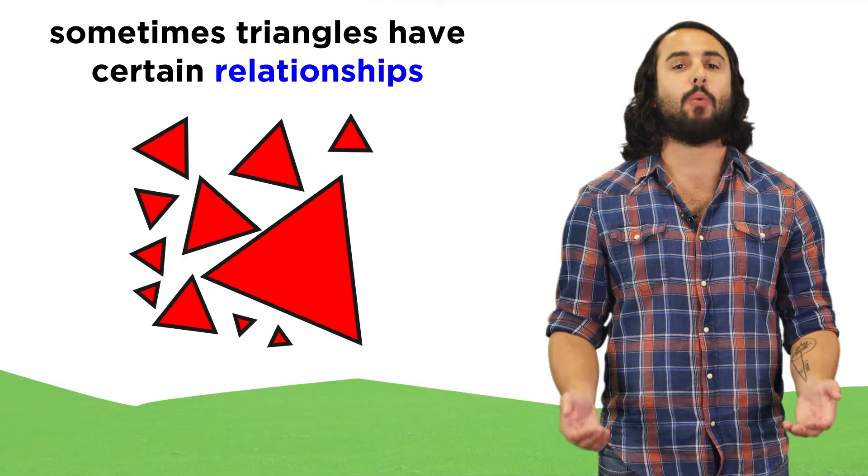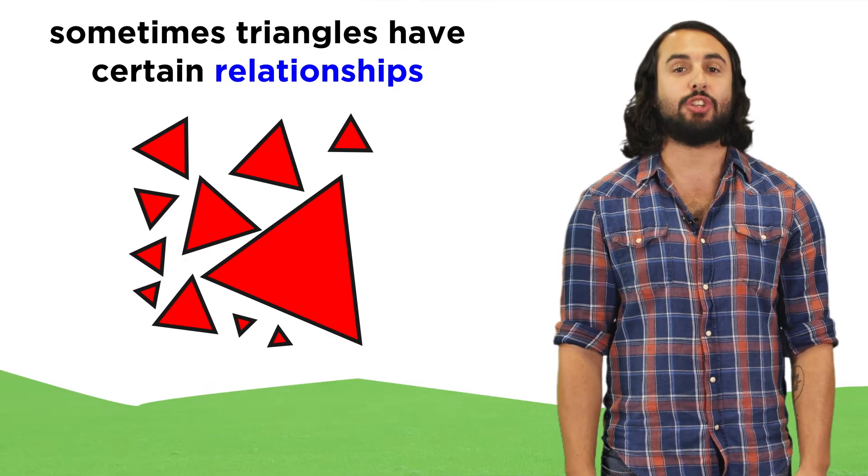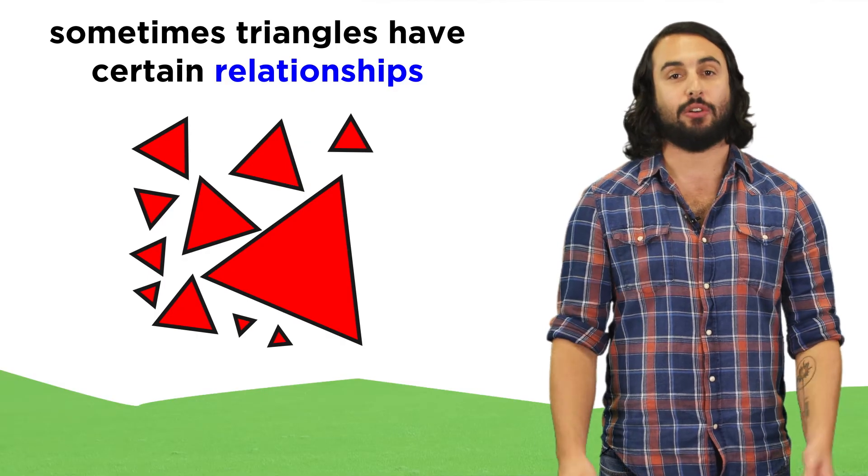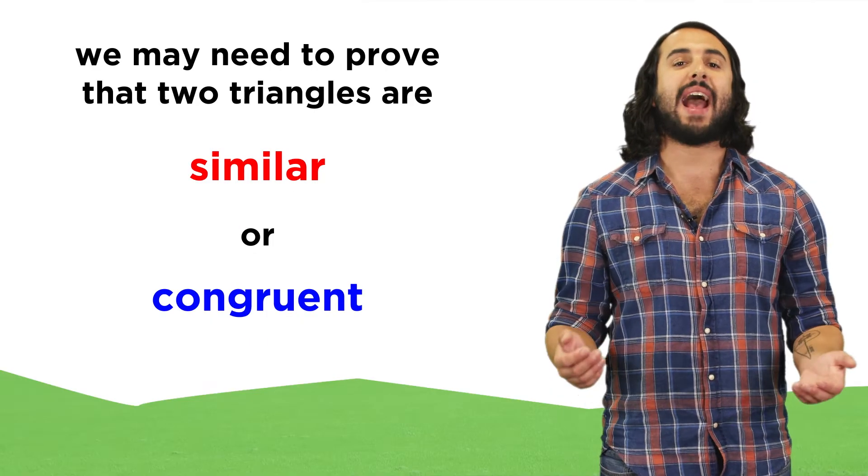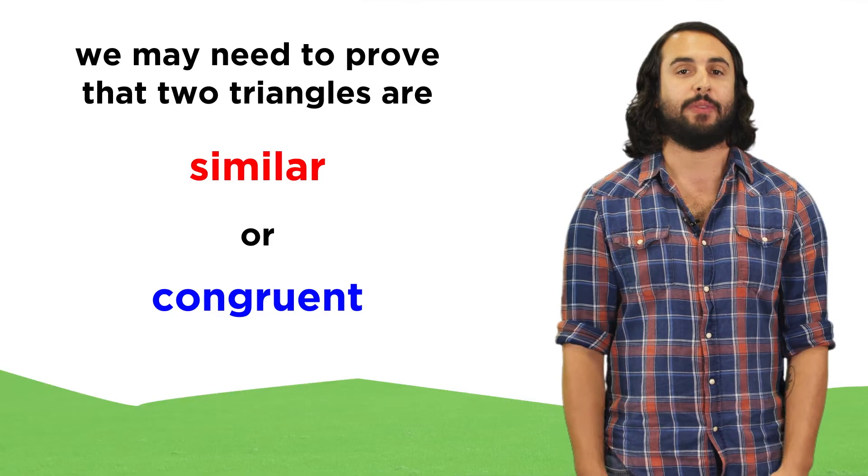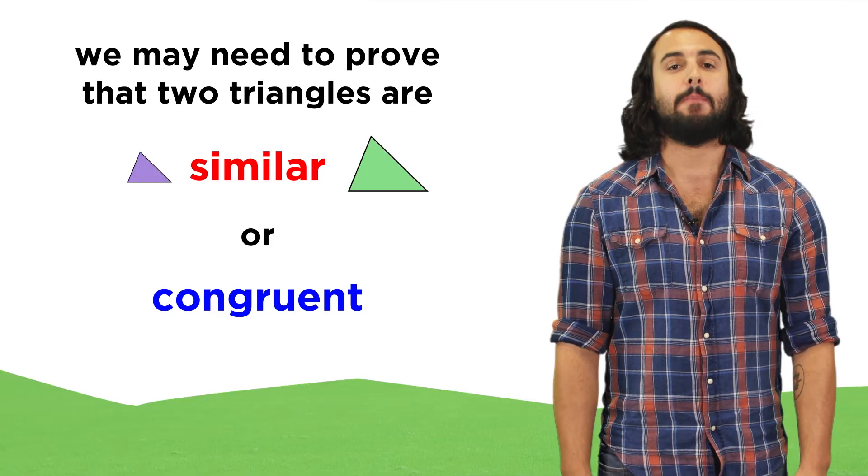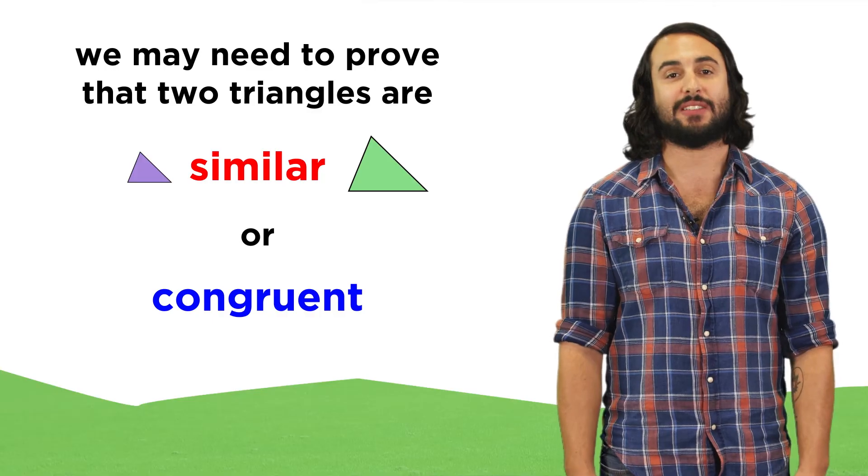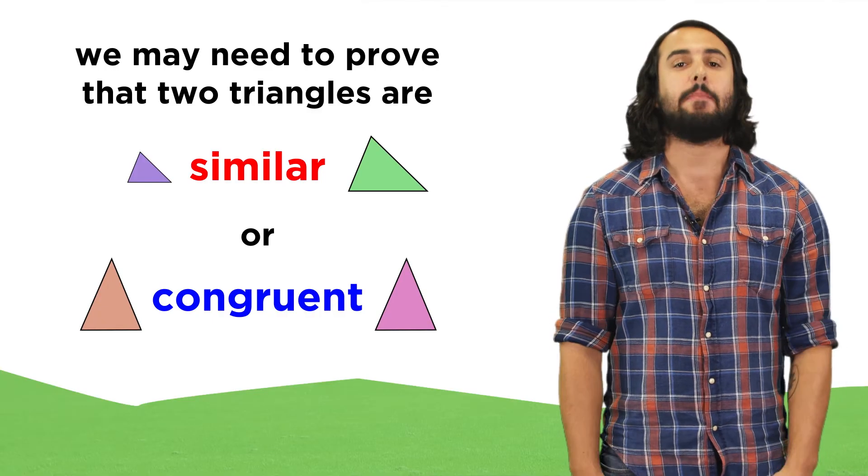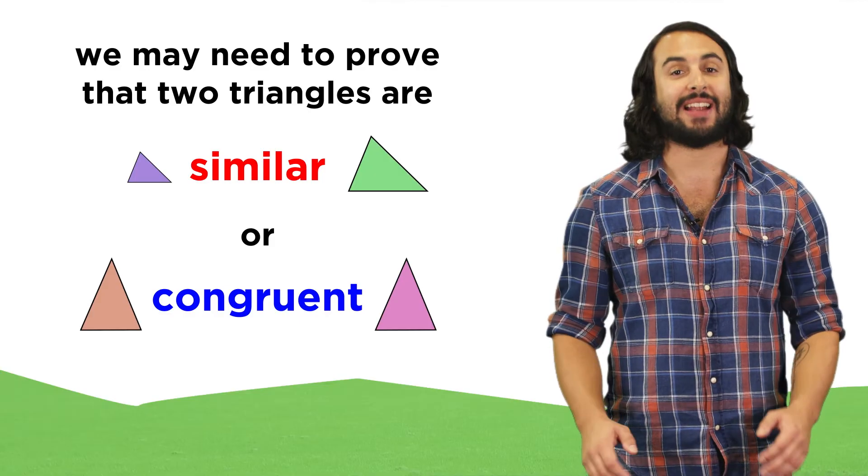One of the things we will want to prove is the relationship between two shapes, like two triangles. Two triangles might be unrelated, or they may have some special relationship. They could be similar, meaning they have precisely the same shape, just different sizes, or they could be congruent, meaning they are absolutely identical.